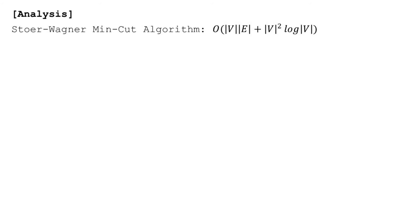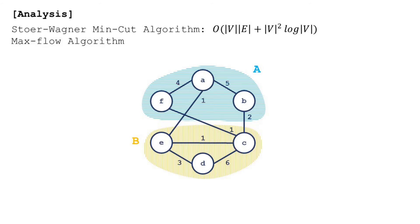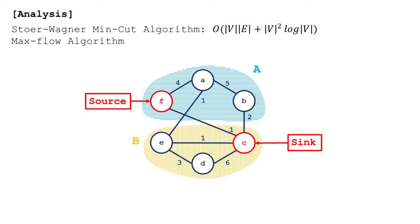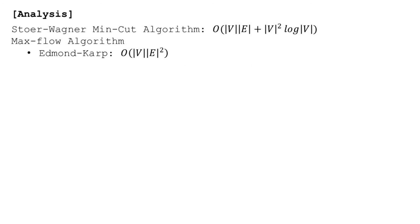How does the Stoer-Wagner min cut algorithm compare to other algorithms? If you've seen min cut before, it's probably in the context of the max flow algorithm. In the max flow problem, there's a source node in one part of the min cut and a sink node on the other, and we want to know the maximum amount of flow we can send from the source to the sink — think of it as the maximum traffic between islands F and C. As it turns out, this maximum amount equals the weight of the minimum cut. Edmund-Karp is the standard max flow algorithm and runs in time on the order of the number of vertices times the number of edges squared.